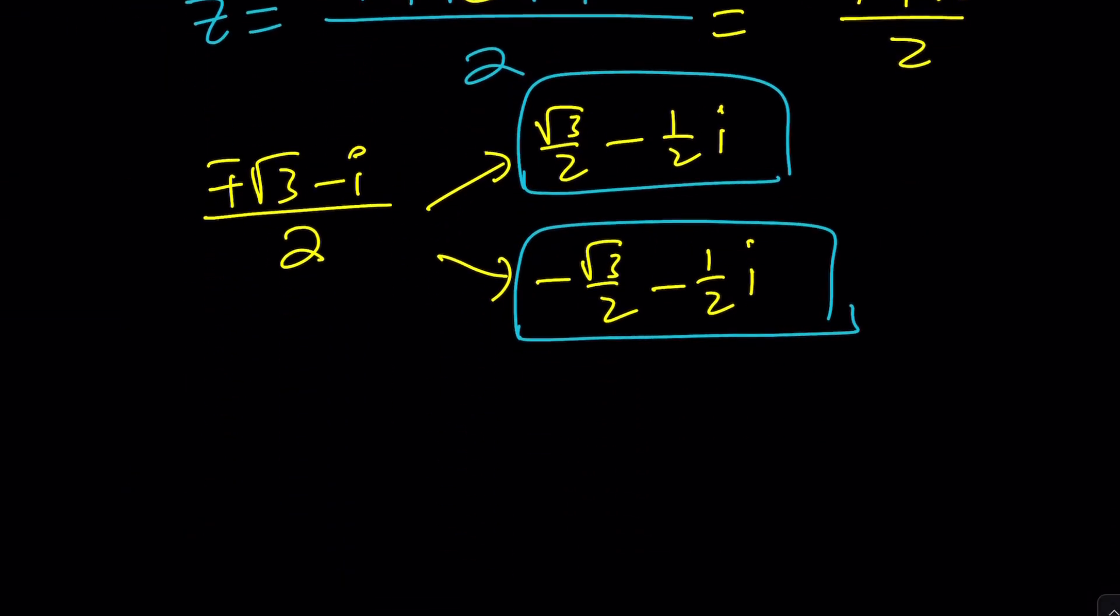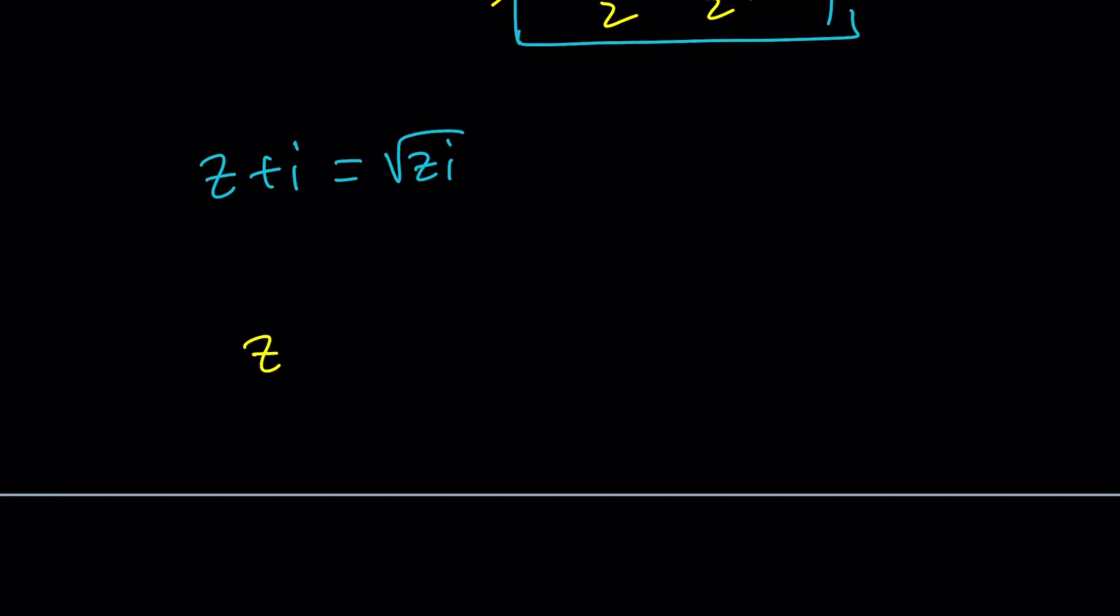Our original problem was z plus i equals square root of zi. Remember, the equation we squared may have different solutions than the original because we changed it. Two different equations can produce the same output when both sides are squared, so that's why it's important to check.